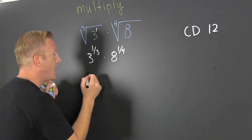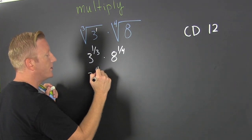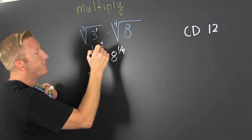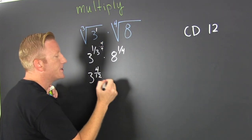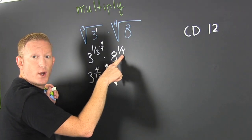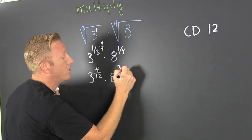So I write this as 3 to the four-twelfths. Why? Because I multiply top and bottom by four over four. Times 8 to the... now that one needs to become twelve, so I multiply it by three. That's three over twelve.